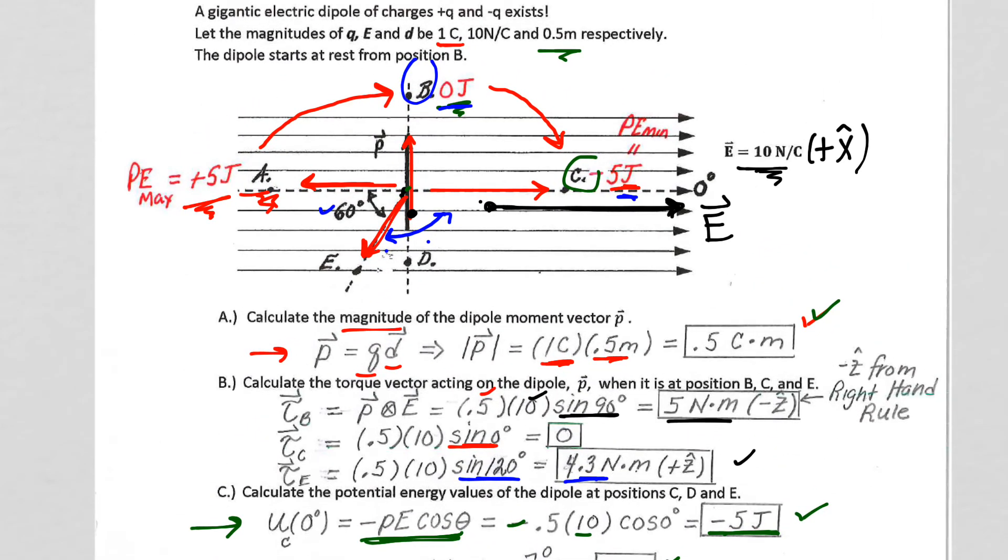In this case, the dipole initially starting at position B would rotate to align with the E field. It would rotate past. It would oscillate down to position D, and then it would oscillate back. So naturally, it would go between B and D. Let me clean up my mess here so I can talk a little bit more about this.